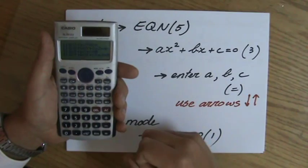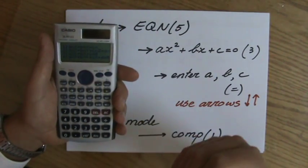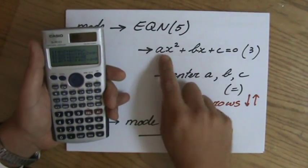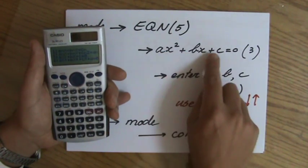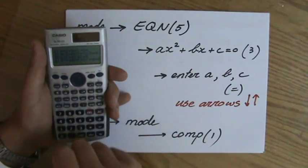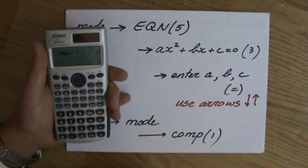Okay, now I'm going to find all types of equations. And I am interested, in this case, to solve a quadratic equation, which has this form: ax squared plus bx plus c equals 0. And in my calculator, that is number 3. So I'm going to press a 3 there. There we go.